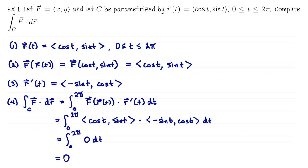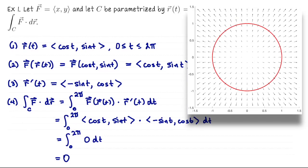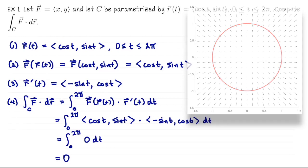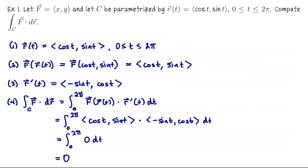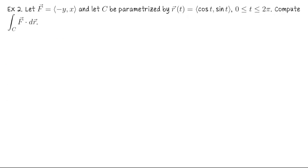That result shouldn't surprise you if you picture what this vector field and curve look like. The vector field F(x, y) = (x, y) points radially outward, and the curve is the unit circle. At every point, the velocity vector r'(t) is tangent to the circle and therefore perpendicular to the radially outward vector field, so the dot product is always zero.